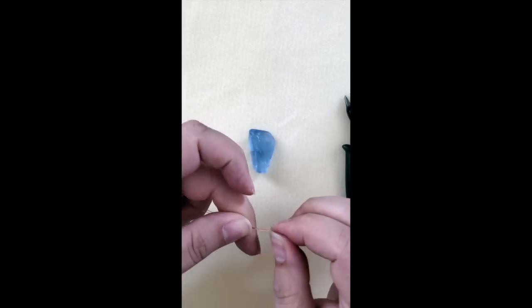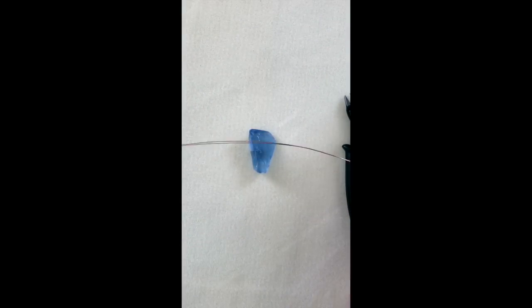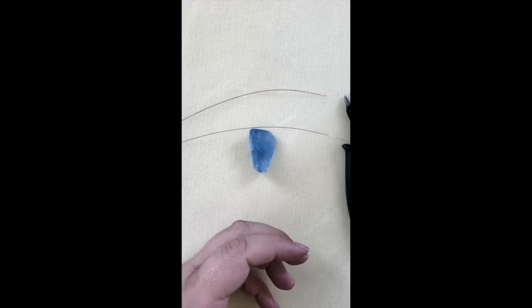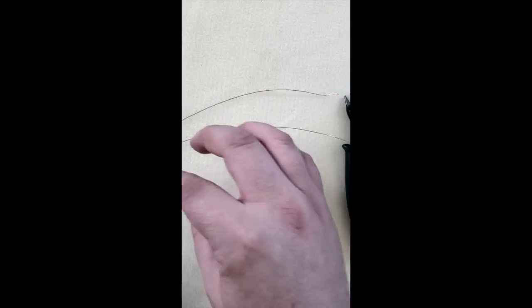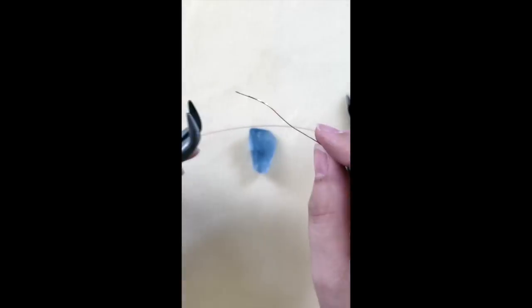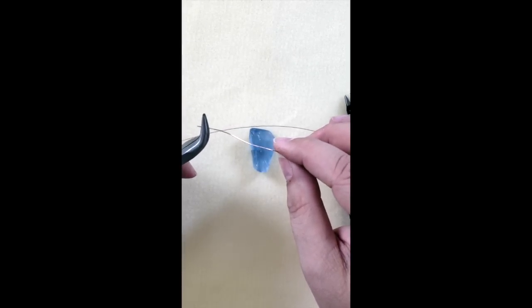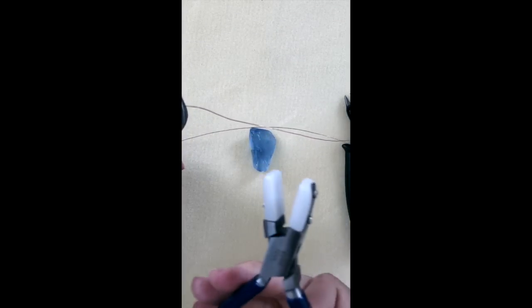So I'm going to find the middle of this. All right. So I found the middle and I'm just going to snip it right there. It doesn't have to be super exact. This is wire, it's kind of forgiving that way. Now I'm going to take my bent nose pliers. I'm going to hang on to one end.